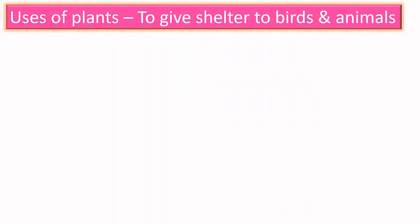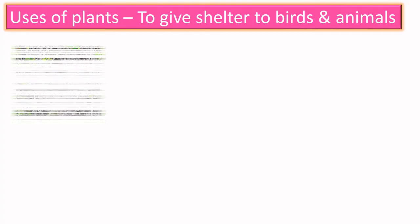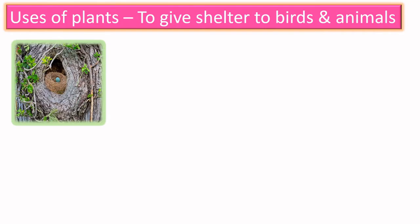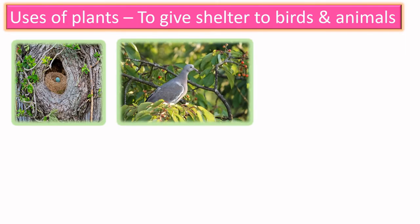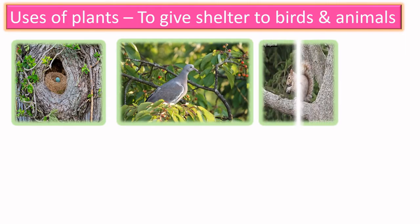The next use of plants is to give shelter to birds and animals. For example, birds build nests in trees and animals stay on trees.